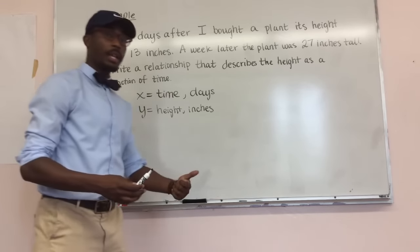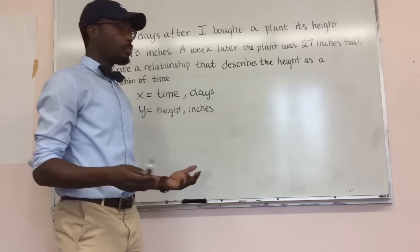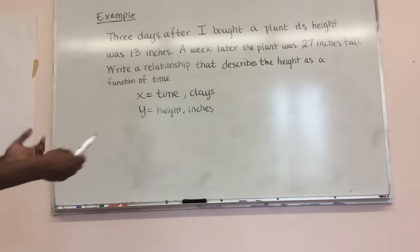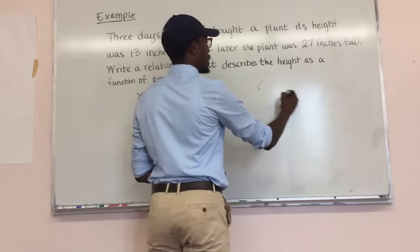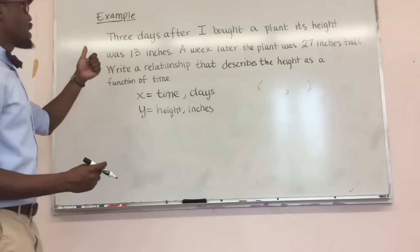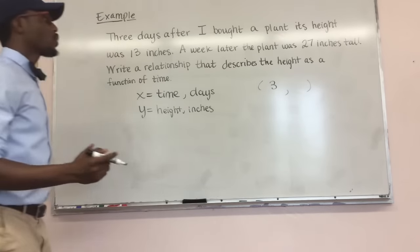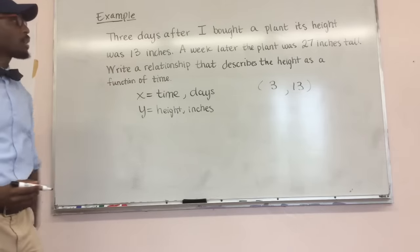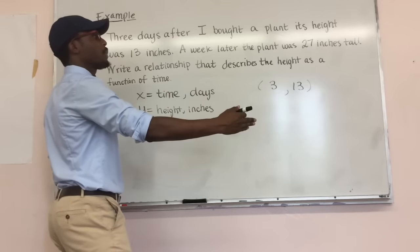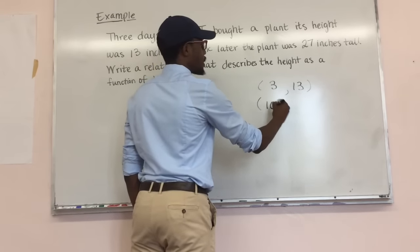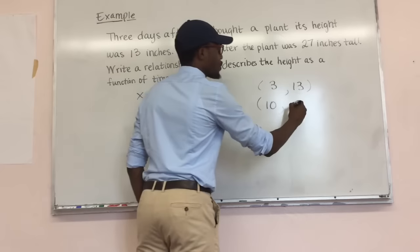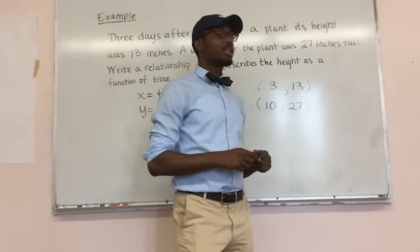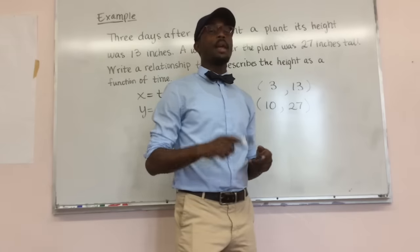Just like last time, first find your slope, then find your Y-intercept. But to find the slope you need two points, so we have to interpret them from the problem. Three days after buying the plant, it was 13 inches tall — that gives us the point (3, 13). A week later means 10 days total, and it was 27 inches tall — giving us (10, 27). Now we have our two points and can create the equation following the same steps. Bring that back tomorrow.